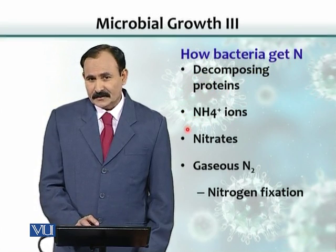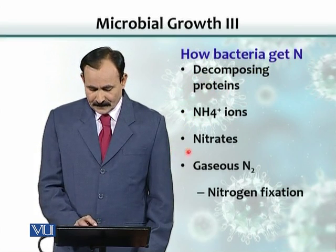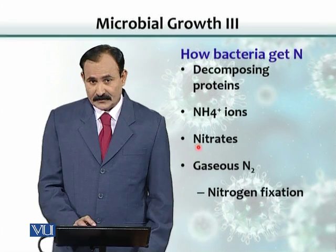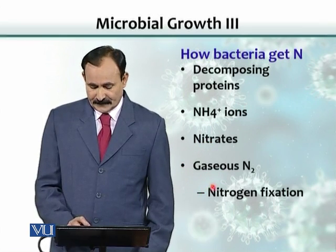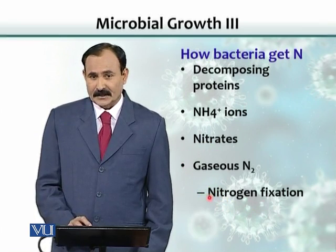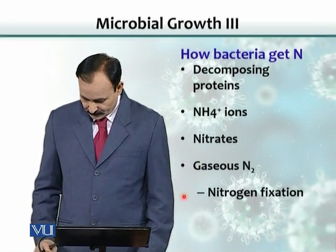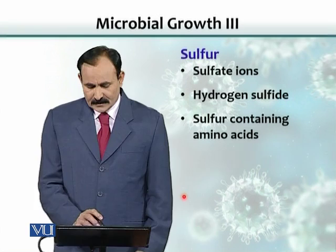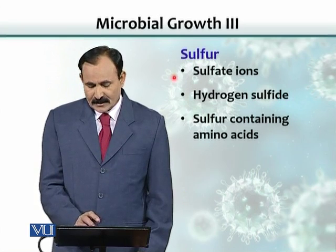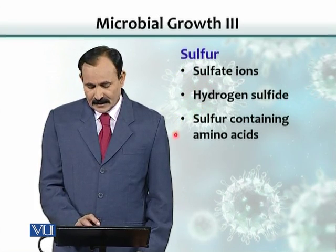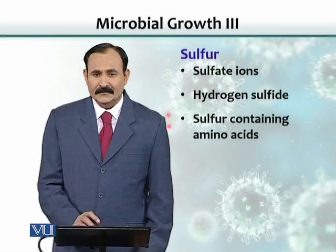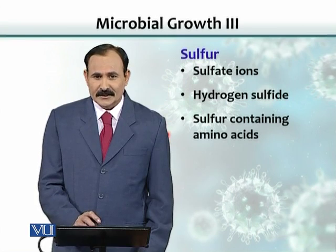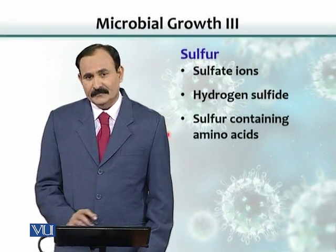Microbes can also derive nitrogen from ammonia ions, from nitrates, and some are able to fix nitrogen from the gas in the air. Similarly, sulfur needs are met by sulfate ions, hydrogen sulfide, and sulfur-containing amino acids. Various microbes have various ways to obtain sulfur from these substances.